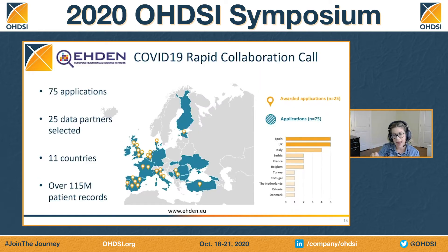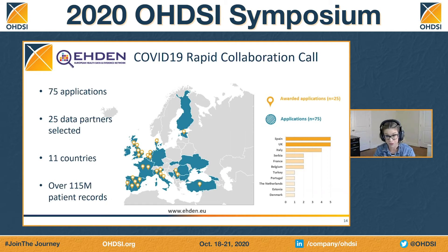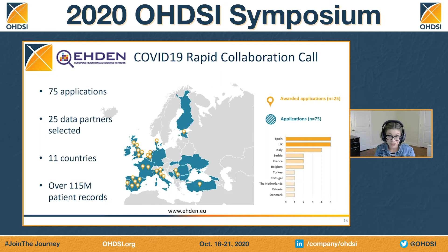At the same time as the study-a-thon, Eden put out a call for data — this was the COVID-19 Rapid Collaboration call. What Eden wanted to do was provide financial and technical support for data partners interested in converting their data into the common data model to support COVID-19 research. We had 75 applications for that grant, and we were able to award 25 data partners. There were 11 countries in those 25 data partners, and we had over 115 million patient lives represented.